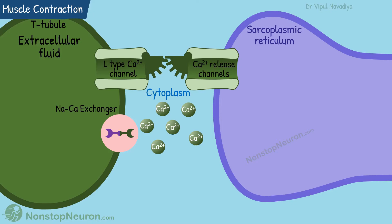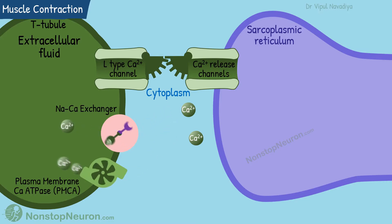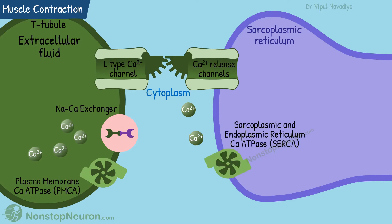The process of contraction is terminated by reducing cytoplasmic calcium concentration. On the plasma membrane we have a sodium-calcium exchanger and plasma membrane calcium ATPase that pump calcium out of the myofibril into the extracellular fluid. On the membrane of the sarcoplasmic reticulum we have SERCA — sarcoplasmic and endoplasmic reticulum calcium ATPase — that pumps calcium back into the sarcoplasmic reticulum. Both of these mechanisms reduce cytosolic calcium concentration.